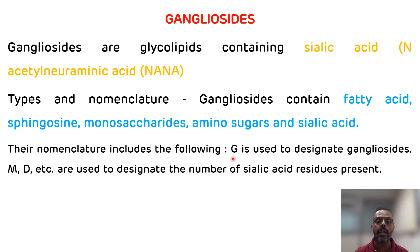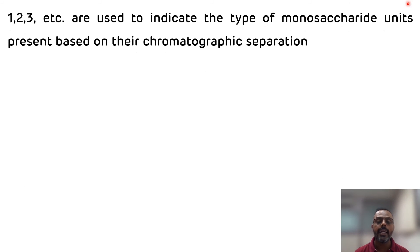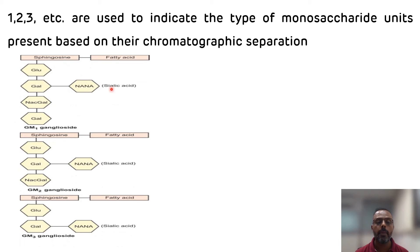The structure of gangliosides includes fatty acid, sphingosine, sialic acid, monosaccharide units, and amino sugars. GM1 ganglioside contains one sialic acid residue; GM2 and GM3 differ in their monosaccharide units as determined by chromatographic separation. These structures have been illustrated showing the progressive differences between GM1, GM2, and GM3 gangliosides.